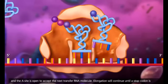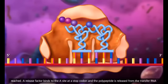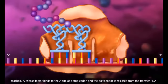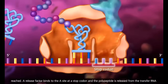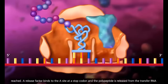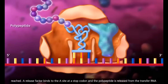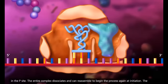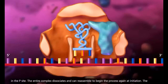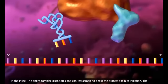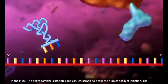Elongation will continue until a stop codon is reached. A release factor binds to the A site at a stop codon, and the polypeptide is released from the transfer RNA in the P site. The entire complex dissociates and can reassemble to begin the process again at initiation.